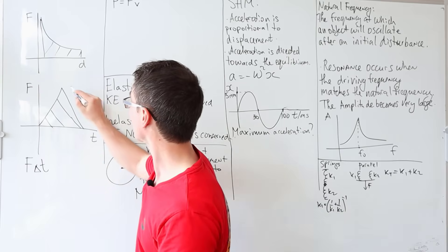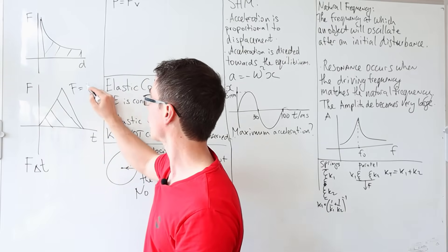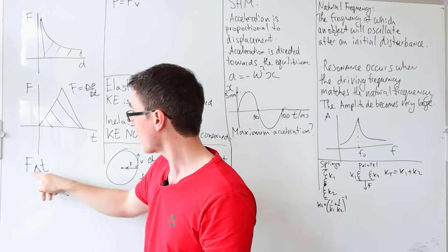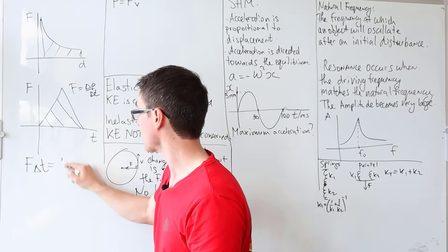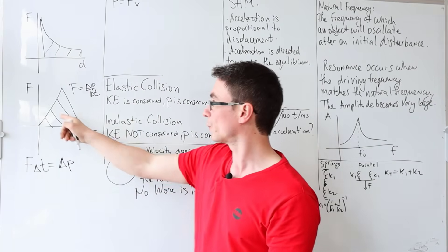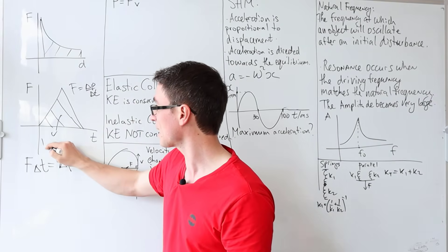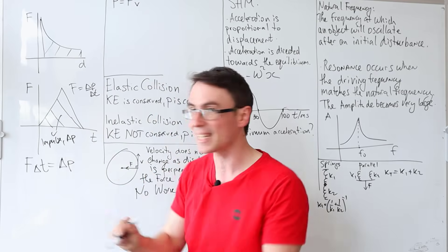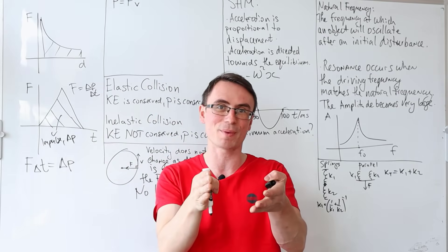Because of Newton's second law, which means that the net force is equal to ΔP divided by Δt, the rate of change of momentum, F times Δt is equal to the change of momentum. So this means that this area here is the impulse, but also it is equal to the change of momentum.